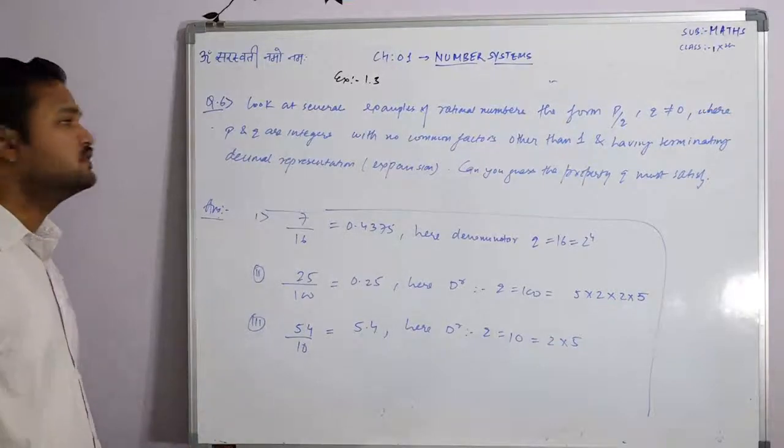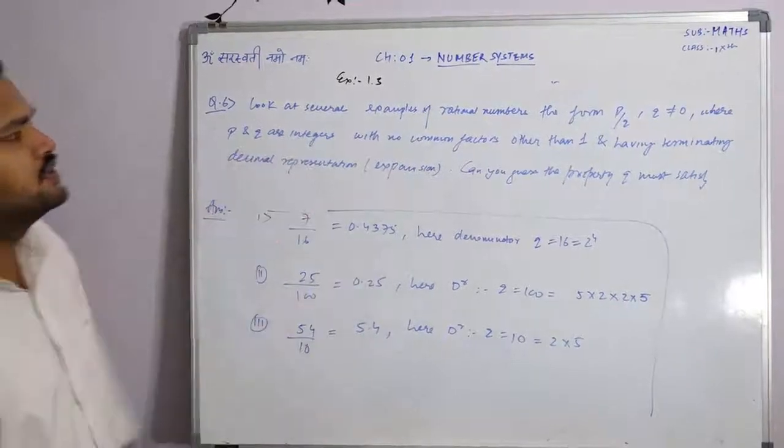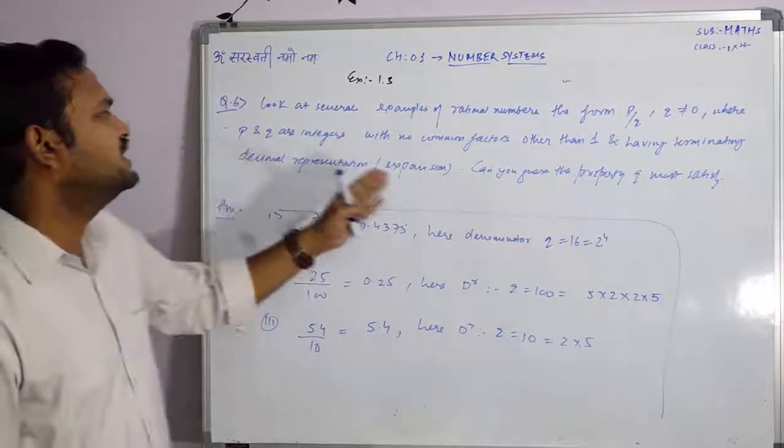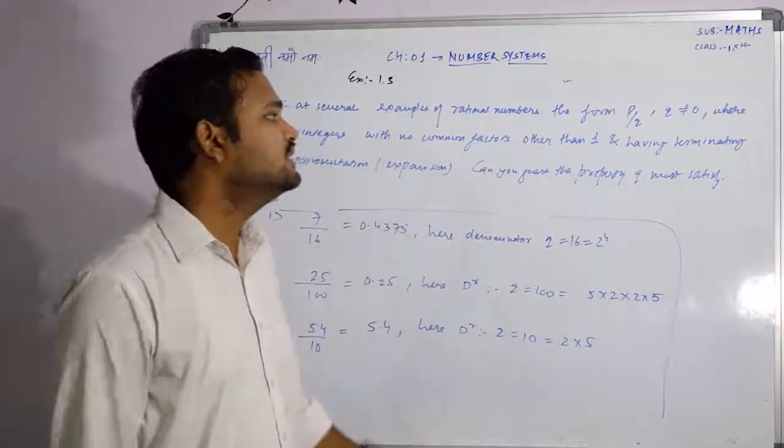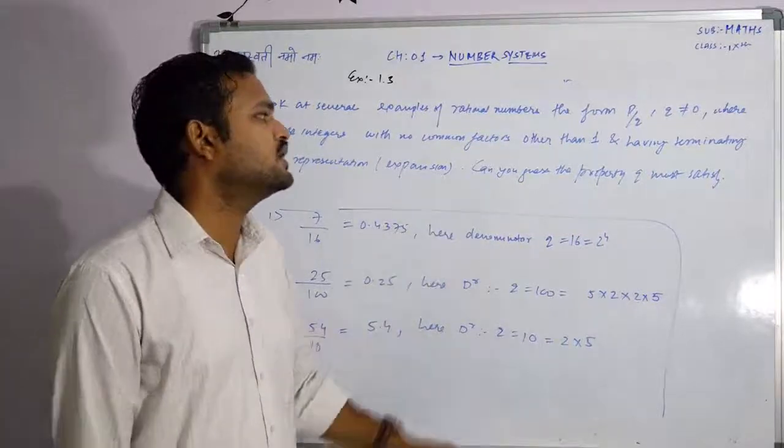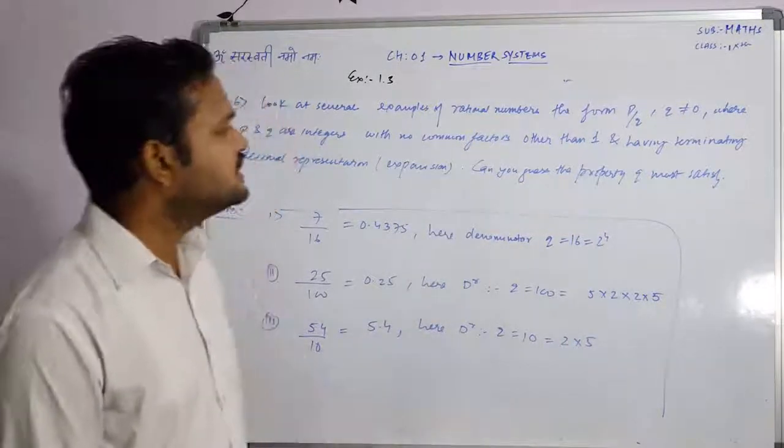Question 6, exercise 1.3. Look at several examples of rational numbers, the form P by Q where Q not equals to 0, where P and Q are integers with no common factors other than 1 and having terminating decimal representation expansion. Can you guess the property Q must satisfy?